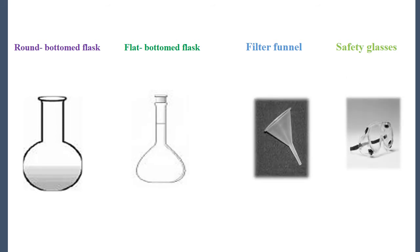Next we have the Round Bottom Flask — as you can see, the bottom of the flask is round, just as the name says. Then we have the Flat Bottom Flask beside it, and as you can see, the bottom is flat, just as it says. Then we have the Filter Funnel, which is used along with a filter paper when separating an insoluble substance. And then we have the safety glasses — there are different types of safety glasses used in the science lab.